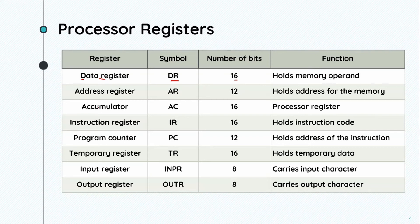The address register has the symbol AR — A for address and R for register. The number of bits is 12. The address register holds the address for the memory.